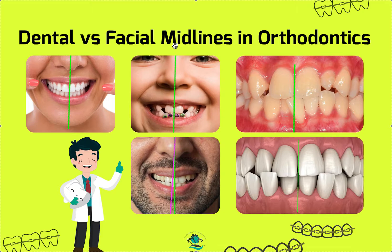Sometimes we can't have it all in orthodontics. Remember, not all patients are symmetric. I'm certainly not symmetric — my nose is a little deviated, one side of my face is a little asymmetric. We're not all born totally symmetrical, and if we're not born symmetrical, we're not going to be symmetric with the midlines. That's just how it is. Most of the time, 99.99% of the time, the patient has no idea what a facial midline is. They may know what a dental midline is, but they're probably not even going to notice if the midline is slightly off with the face.